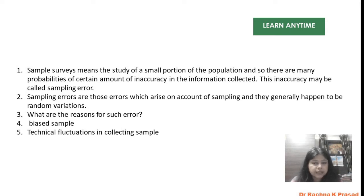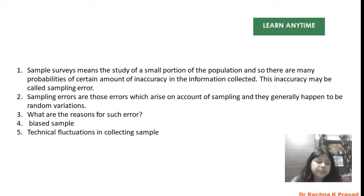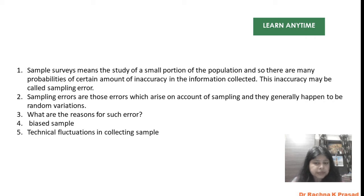Why does sampling error happen? Basically, many times we collect a sample from the population — the sample being a small portion of the total population under study. There are many probabilities that a certain amount of inaccuracy may exist in the collected information. We collect sample data using different sources: economic surveys, statistical surveys, census surveys, or other sources. Because of using various sources, the probability of error in our research sample also increases.